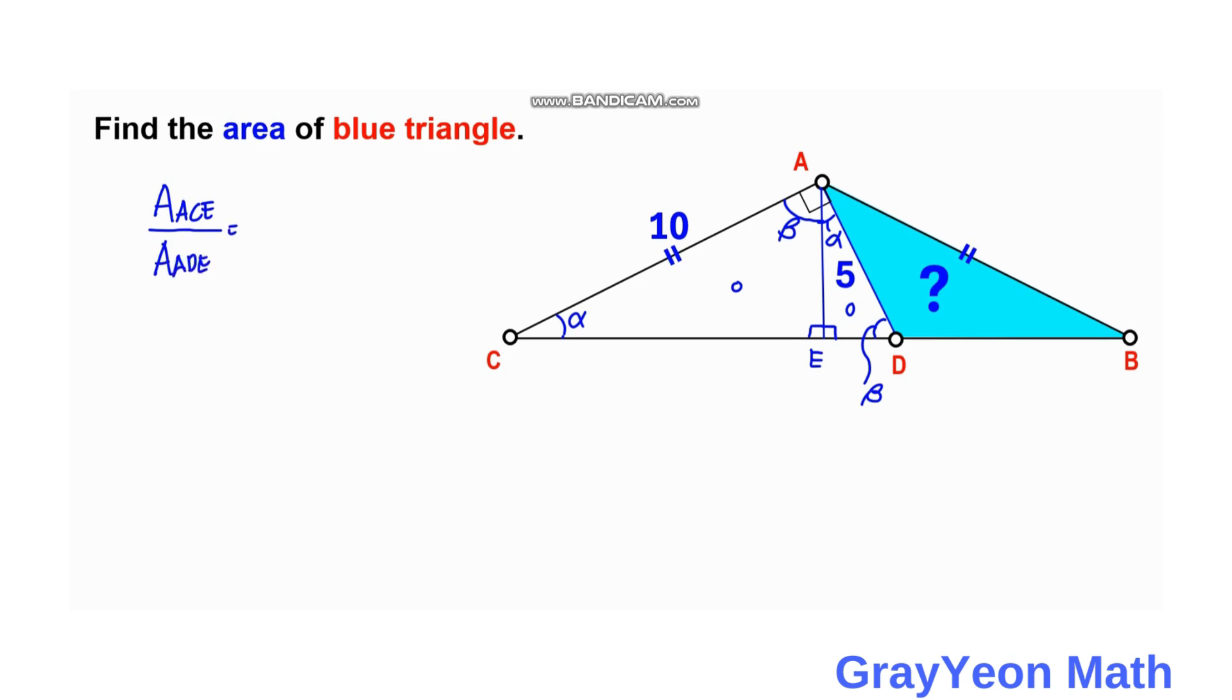The corresponding sides for ACE, we are given both the hypotenuses for the two triangles. So for ACE it is 10, and for ADE it is 5. But we need to square this because we are using the area scale factor.